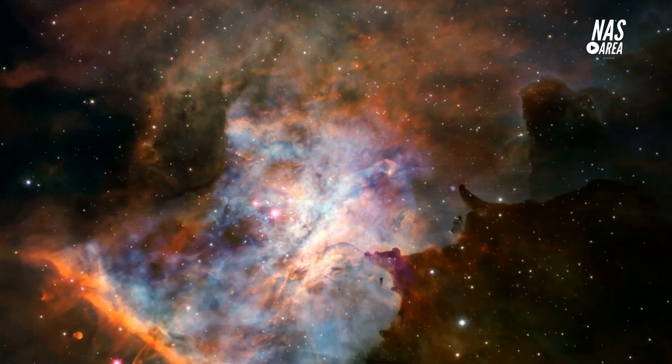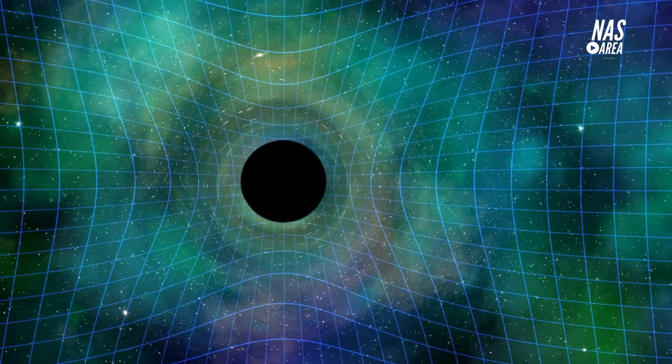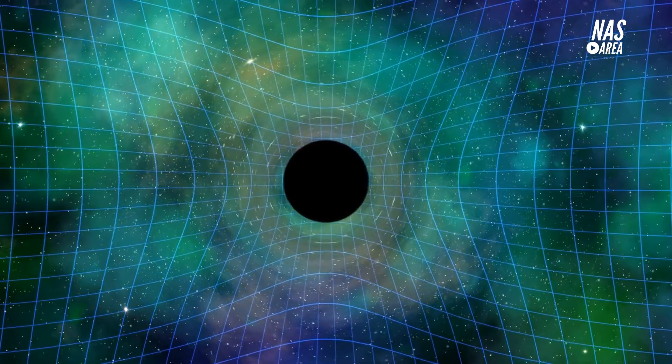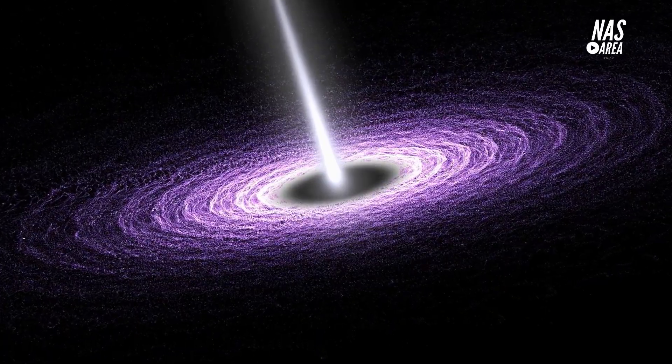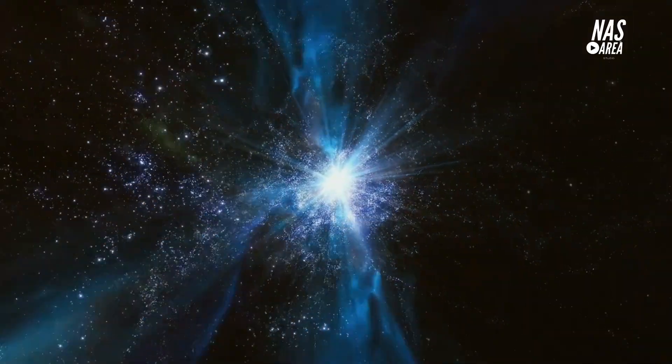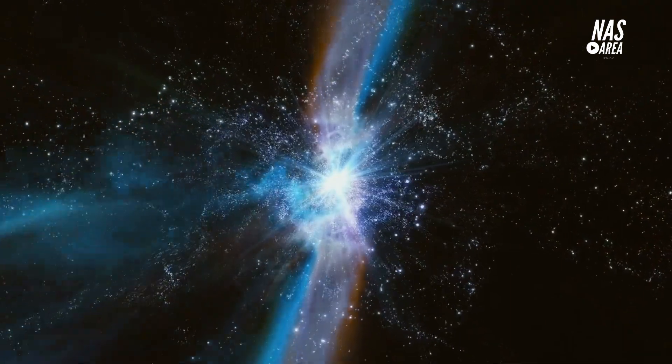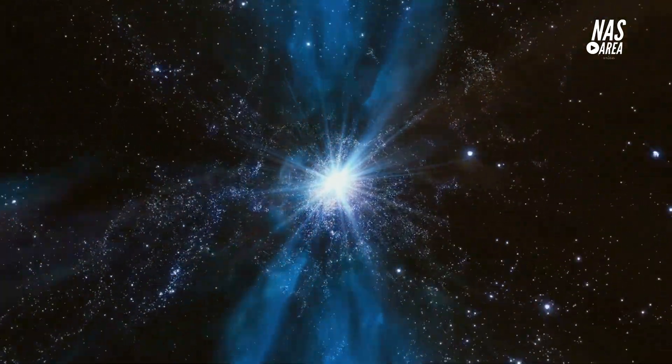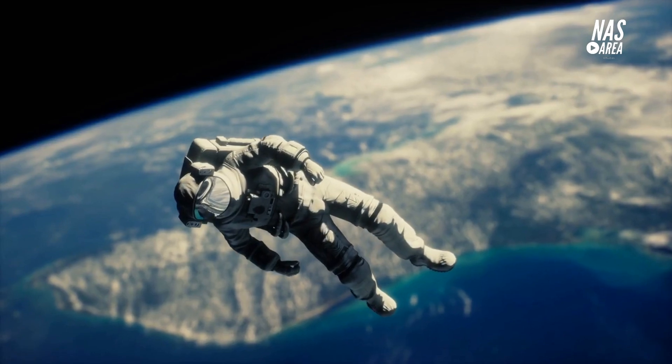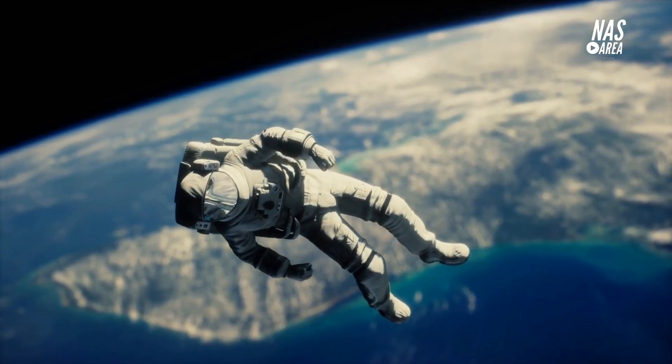General Relativity is the more famous of the two types of relativity. It is a theory that describes the behavior of gravity in the universe. According to General Relativity, massive objects like stars and planets create a dent in space-time, which causes other objects to be attracted to them. The greater the mass, the greater the dent, and the stronger the gravitational pull.